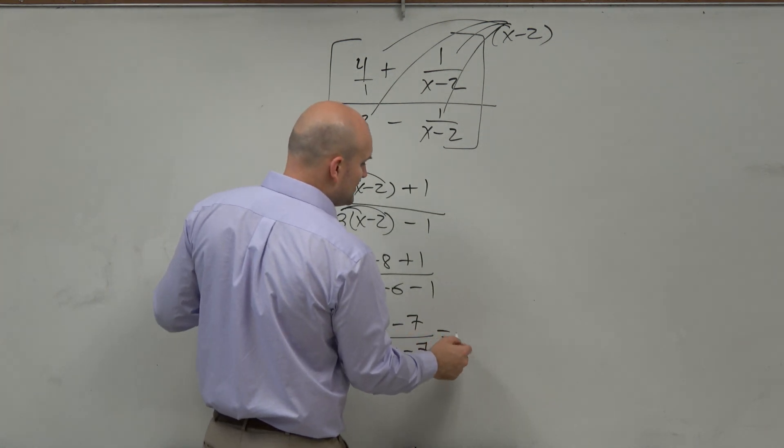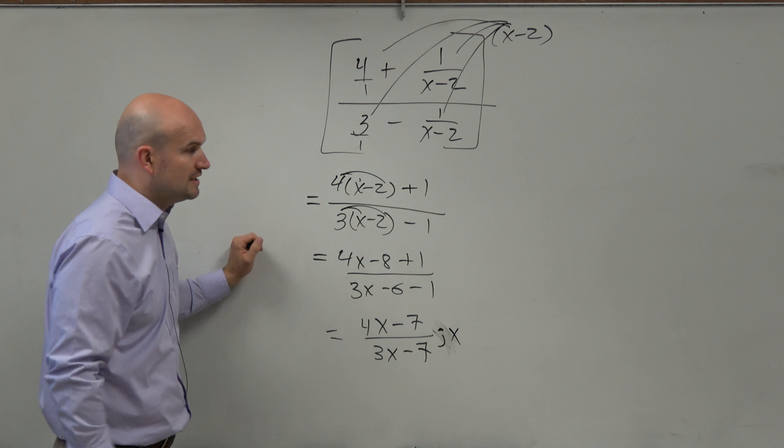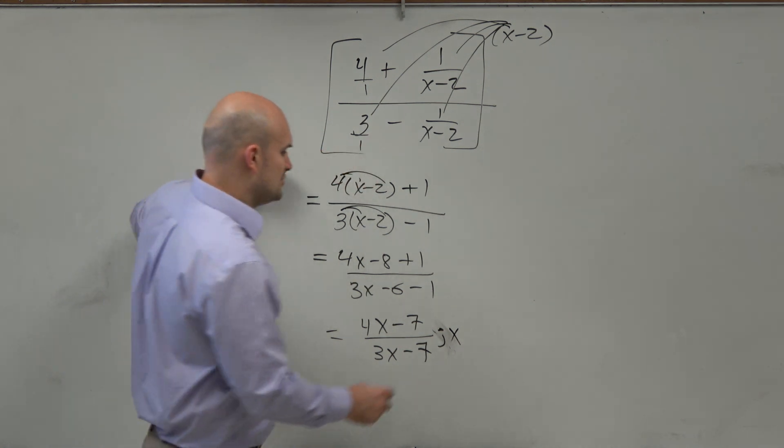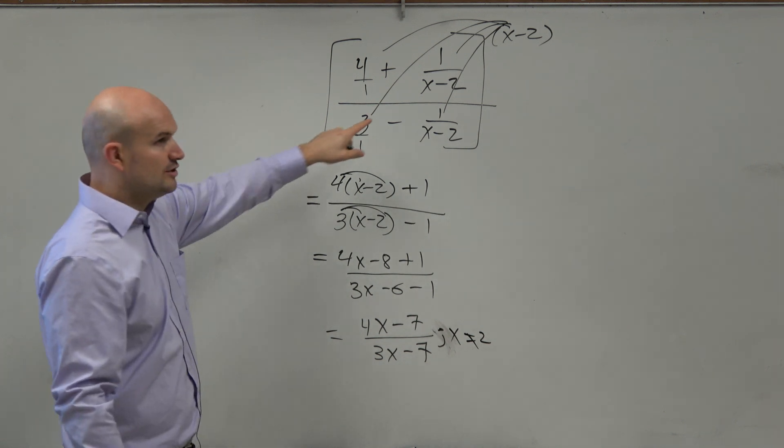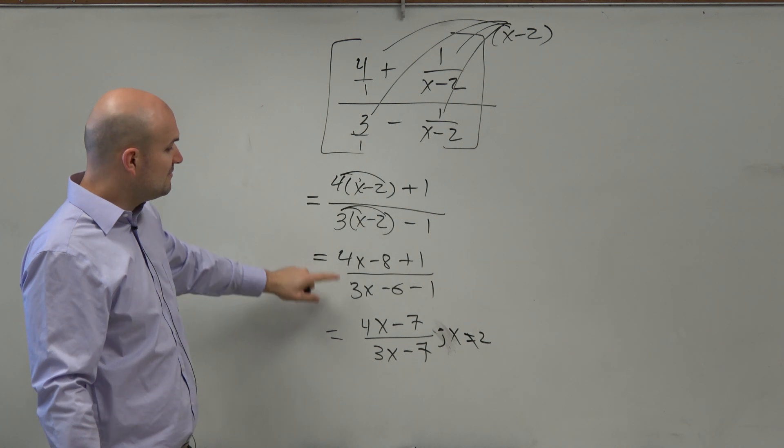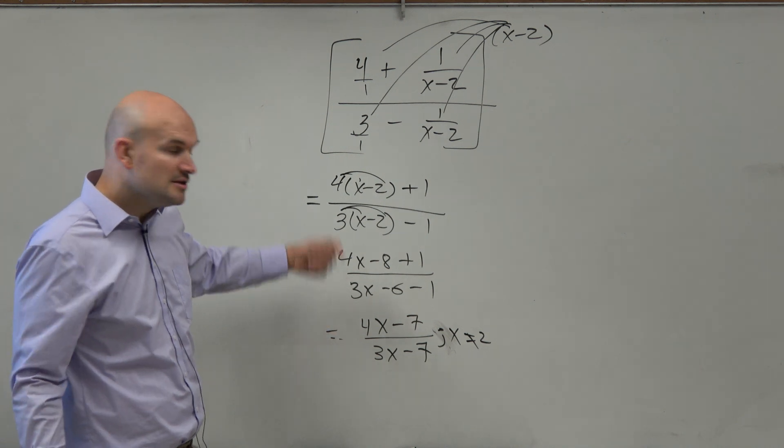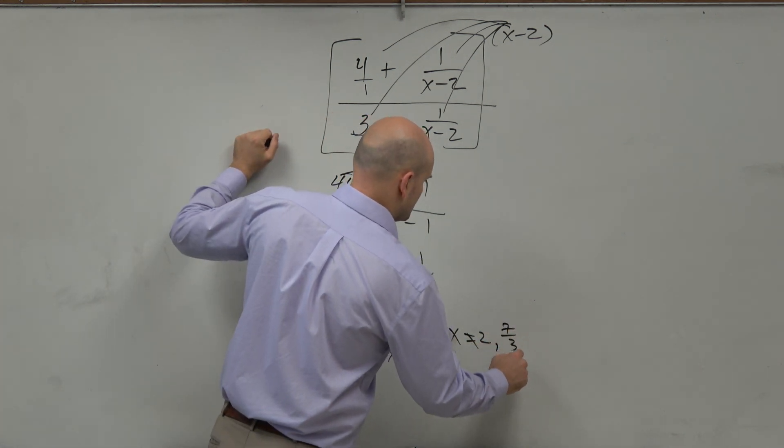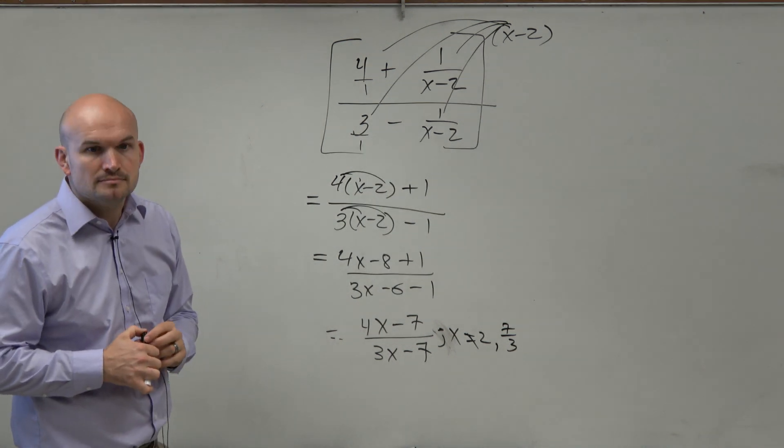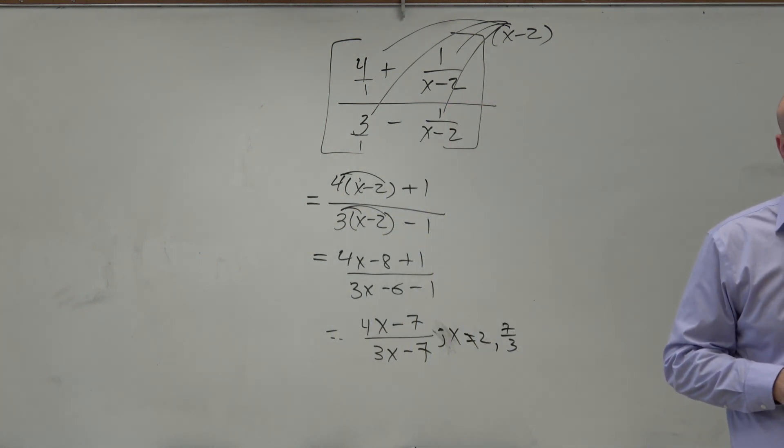So therefore, let's look at the excluded values. Because remember, that was something we talked about at the beginning of the lesson. So in this case, we know x cannot equal 2, right? Because in the original problem, that would make the denominator equal to 0. But what about in our simplified answer? What's going to make our denominator 0 here? Set it equal to 0 and solve. You get 7 thirds. I just set the denominator equal to 0. I didn't show my work, because I was hoping you guys are getting more and more comfortable with that.